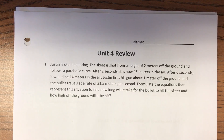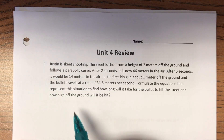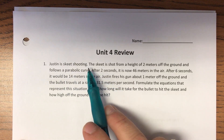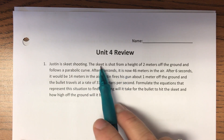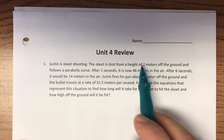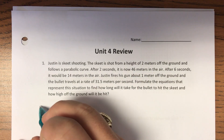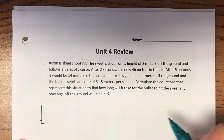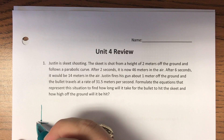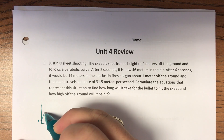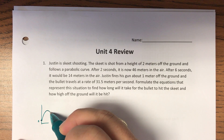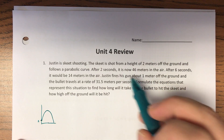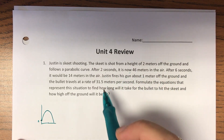All right, it's time to get ready for our Unit 4 test. Number one has a word problem where Justin is practicing shooting. It says that the skeet is shot from a height of two meters off the ground, and then it follows a parabolic curve, and it's got some points for us which we'll use.